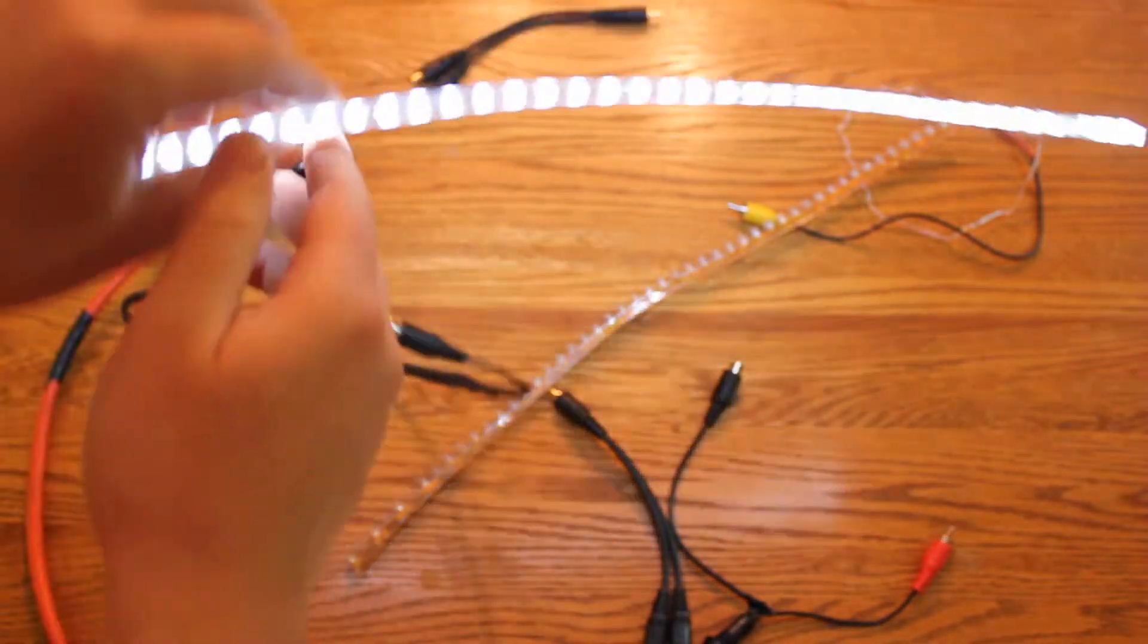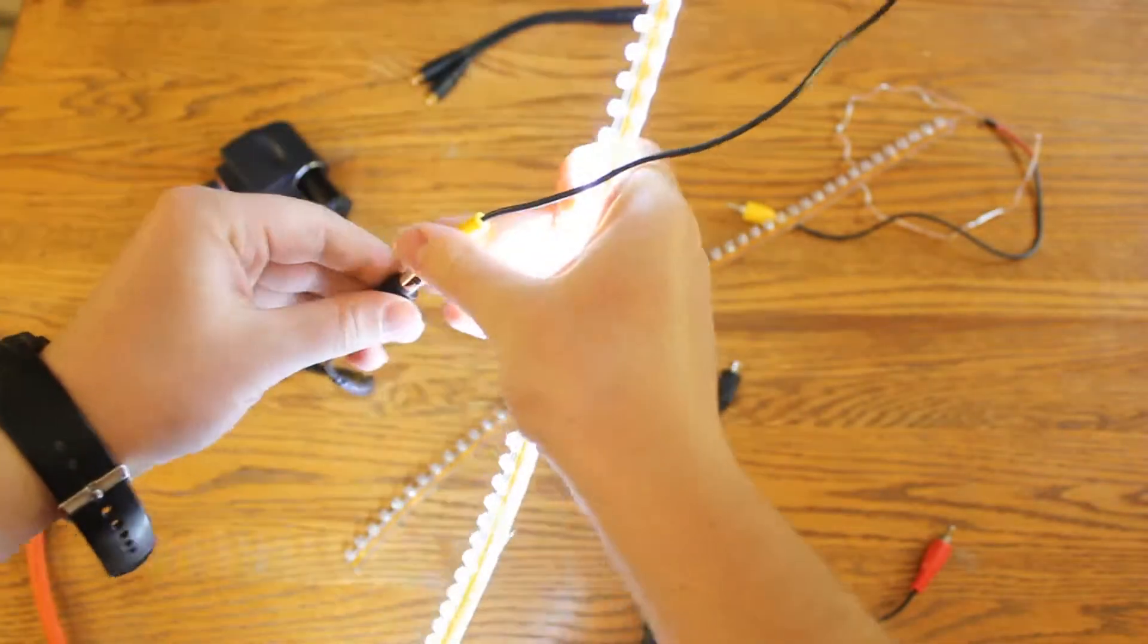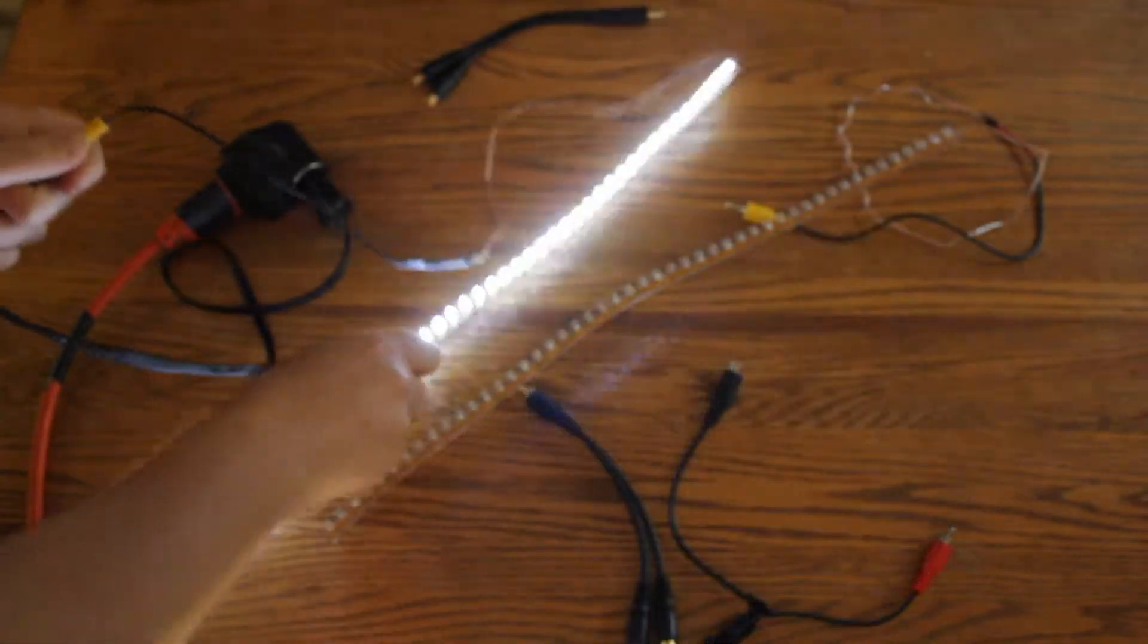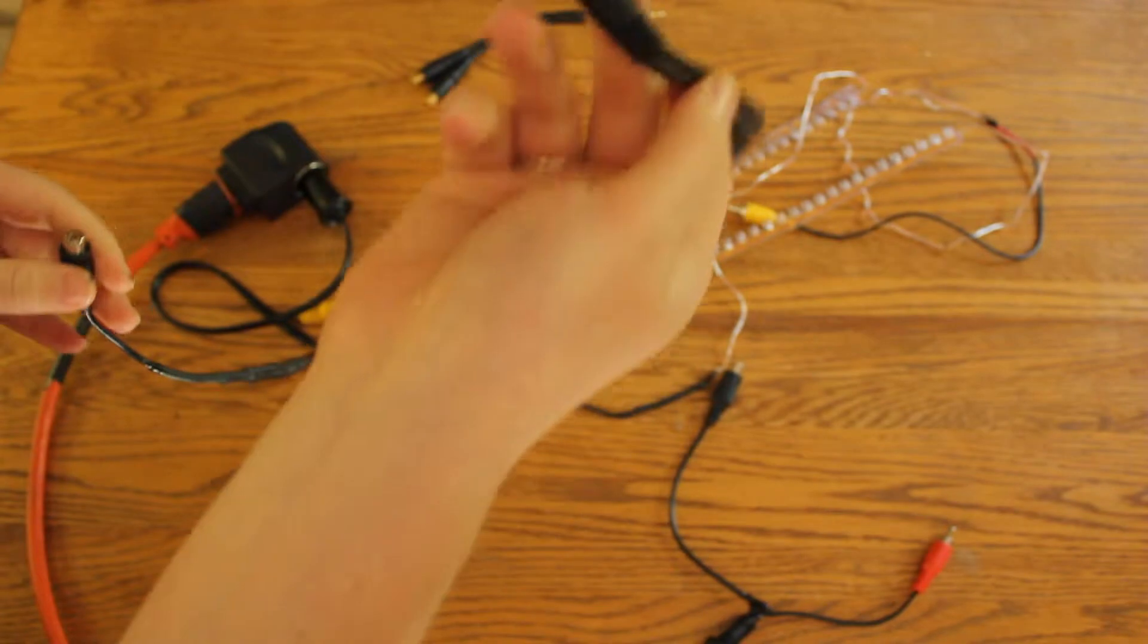You can get these lights from Hong Kong for a couple dollars. This length is like three. I made it RCA so you can just change it around. Soldering is better, but this is better if you're going to be changing things around.